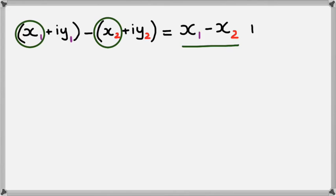And now we look at the imaginary part, which is iy1 and iy2. So we would have i(y1 minus y2). Okay.